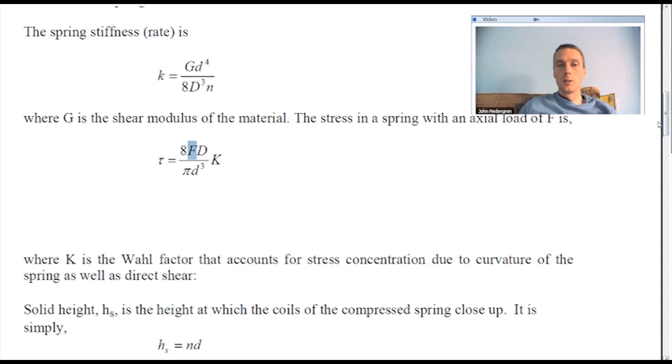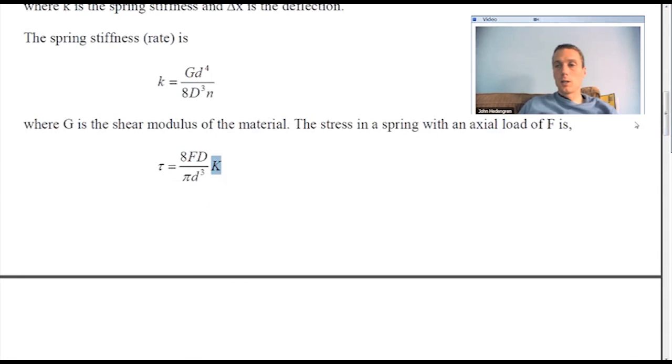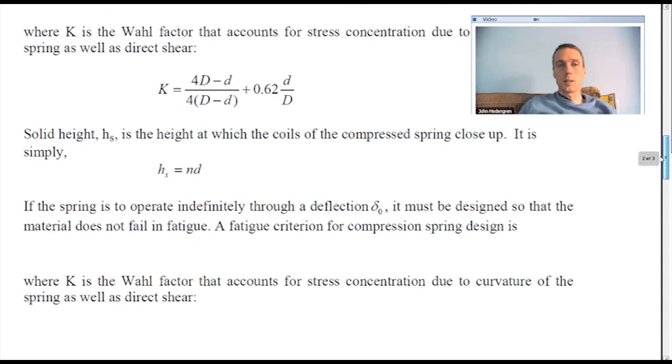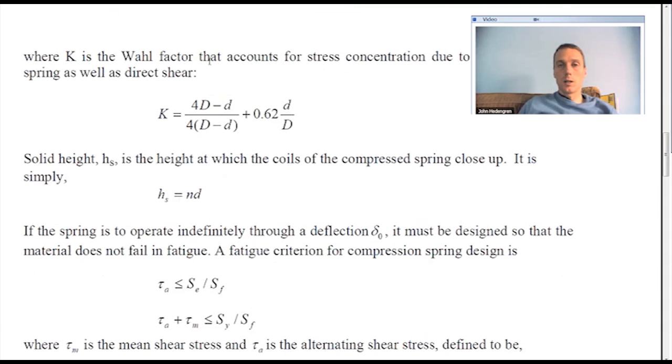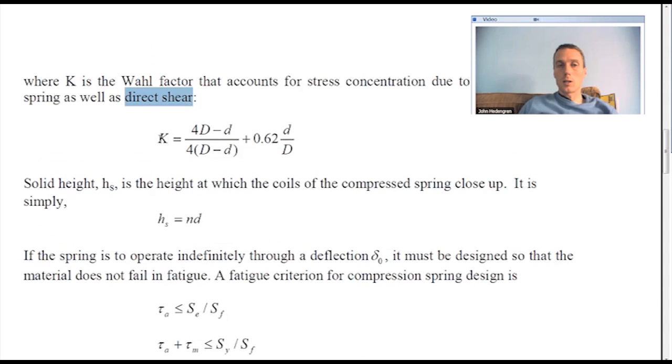We also have a K value. You saw a K value here. The K value is defined down here as the Wahl factor. So it accounts for the stress concentration due to the curvature of the spring as well as the direct shear. So here's another relationship between the diameter of the spring and the diameter of the wire and this Wahl factor.